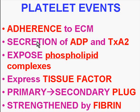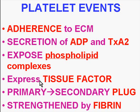There is then secretion of ADP and thromboxane A2 from the granules of the platelet, and this exposes phospholipid complexes which now enable the platelet to express tissue factor. Tissue factor triggers off the extrinsic coagulation cascade, ultimately resulting in the primary plug of aggregated platelets becoming the secondary plug, strengthened by fibrin. That's how you go from platelet to blood clot.